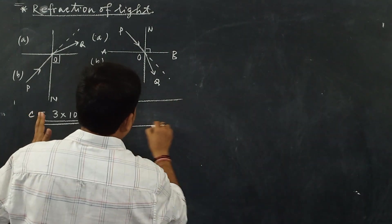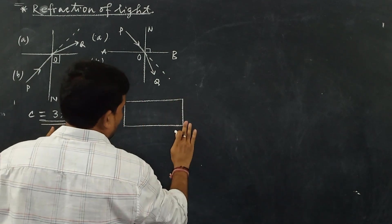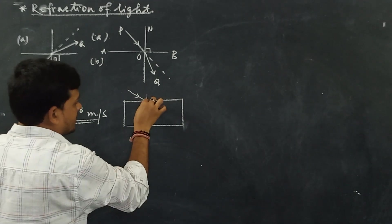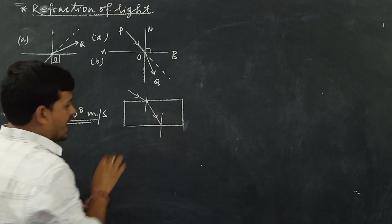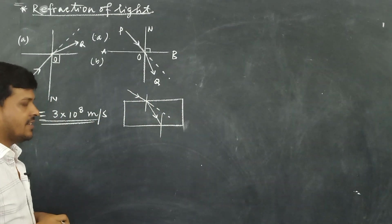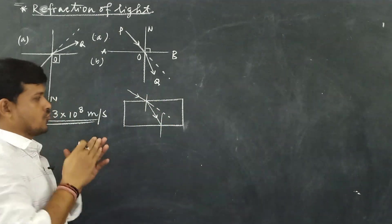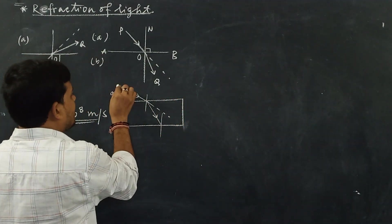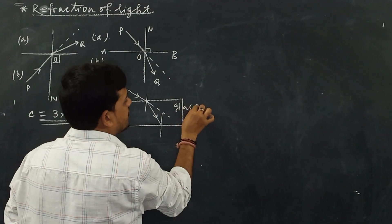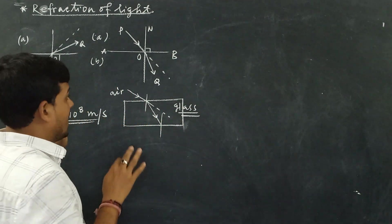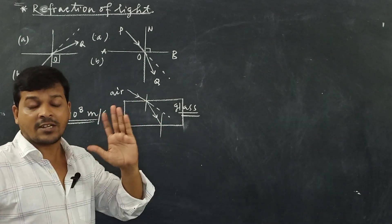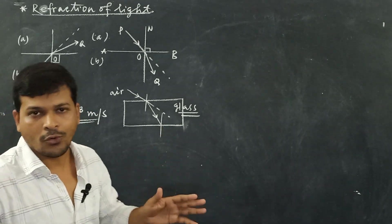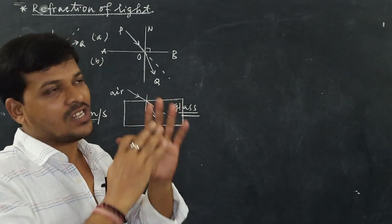If we consider a rectangular glass slab, when the light ray falls on it, the light ray bends towards the normal at the point of incidence — this is the actual path the light ray would have taken. The light ray bends towards the normal because the velocity of light is reduced in the glass. As it enters from air into the glass medium, the velocity is reduced, and as a result the light bends towards the normal, trying to reach the destination by following the least path.